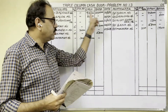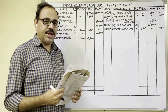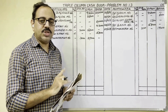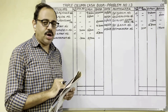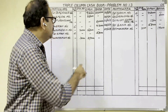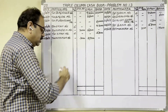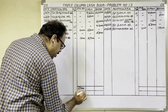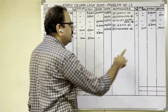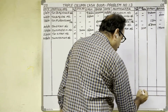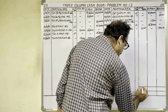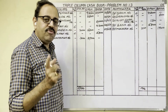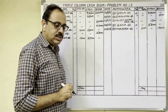All transaction postings are now complete. Next step is balancing. For the discount columns we should not balance them — just put the totals. Debit total: 500 rupees. Credit total: 100 rupees. For cash column and bank column we should balance properly.